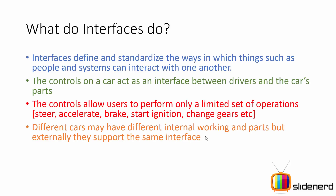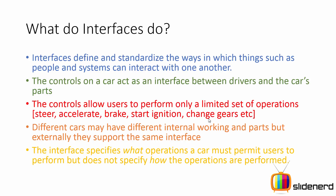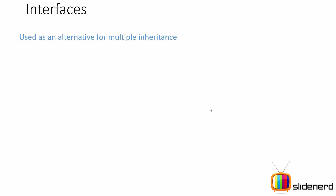Other than the controls your car provides, there is no way you can control how much petrol is getting burnt inside your engine. Different cars may have different internal parts, but externally they all have a similar steering wheel, controls, clutch, and gear. The interface specifies what operations a car must permit users to perform, but does not specify how those operations are performed. The actual work is done by the parts inside — it's not just the switch or the steering wheel doing all the work. This is the way you have to think when working with interfaces in Java or C#.